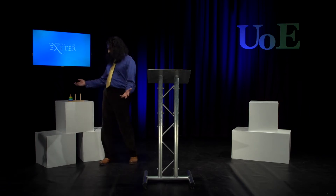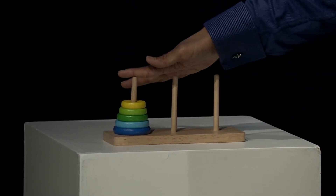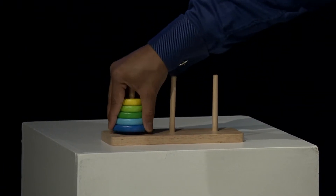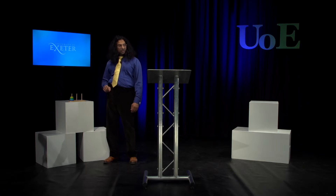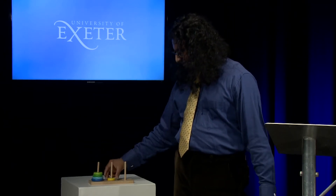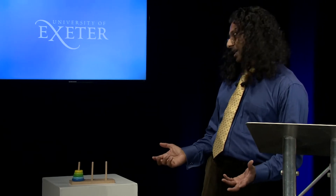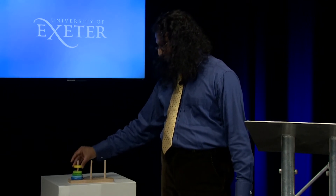I'm going to illustrate that with this little toy puzzle called the Towers of Hanoi. We've got five disks and our goal is to move all of the disks from peg one to peg three. We can only move one disk at a time, and we cannot put a larger disk on top of a smaller disk. The question is: what's the smallest number of moves needed?